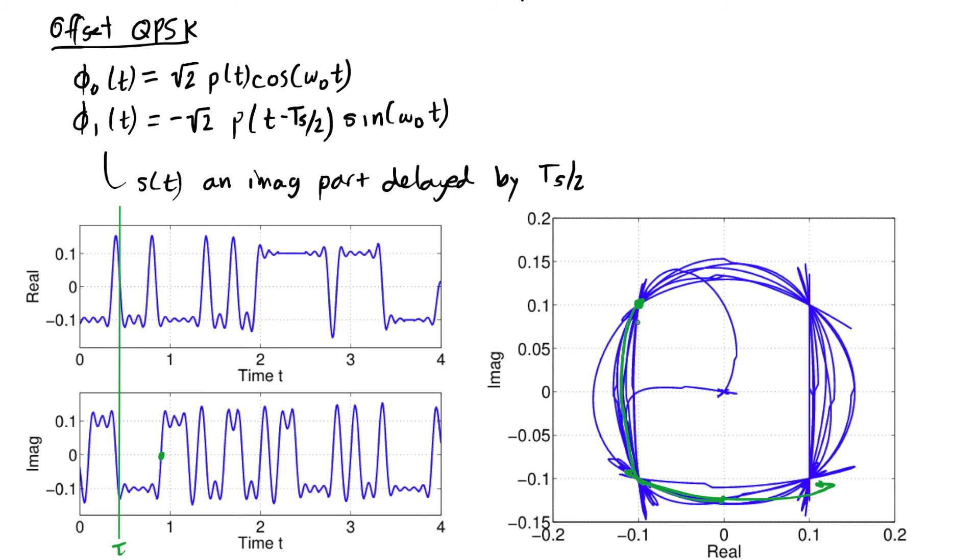At no point is the real part going to go through 0 at the same time that the imaginary part also goes through 0. And in that way, the envelope is always away from the origin. It's not constant exactly, but it's approximately constant envelope. And for the engineering purposes, we call this modulation constant envelope.